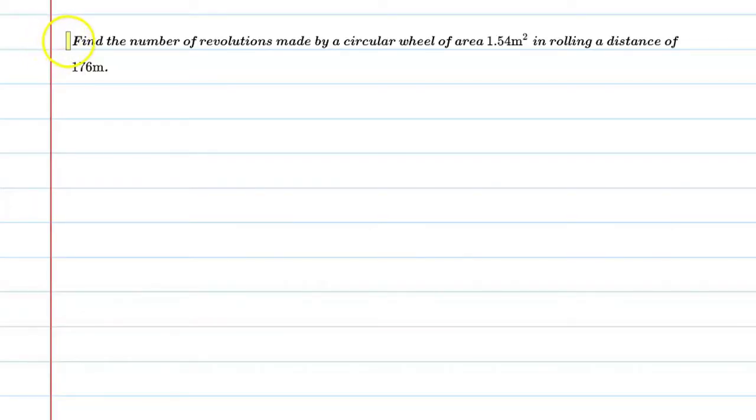Hello students, let's solve this question. Find the number of revolutions made by a circular wheel of area 1.54 meters square in rolling a distance of 176 meters.